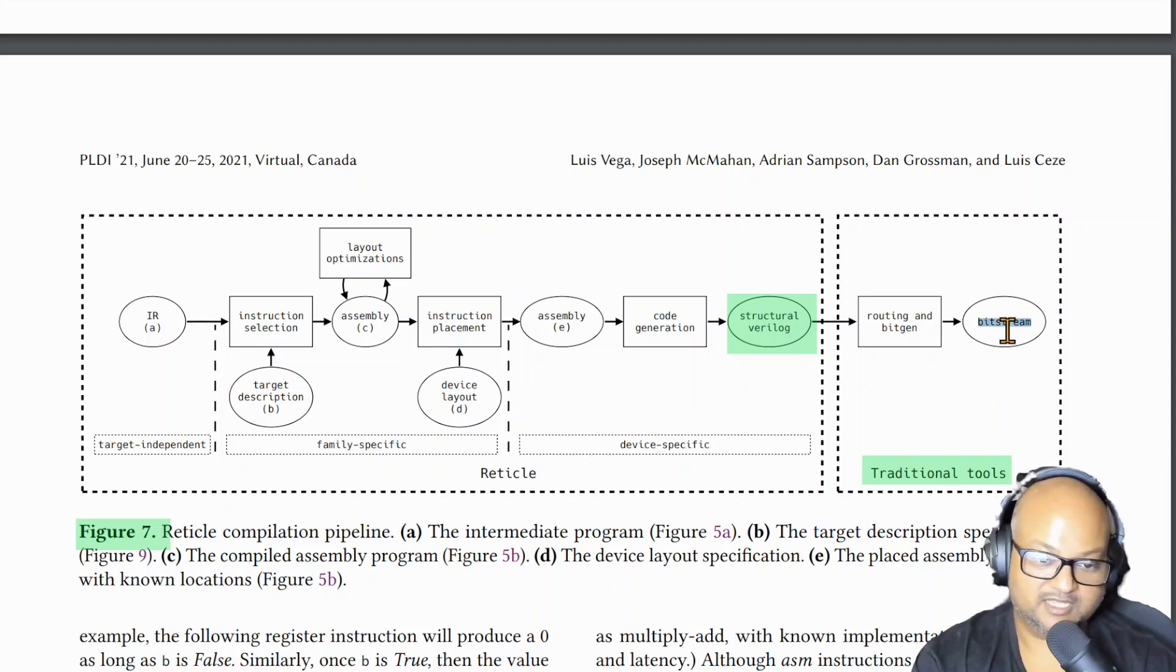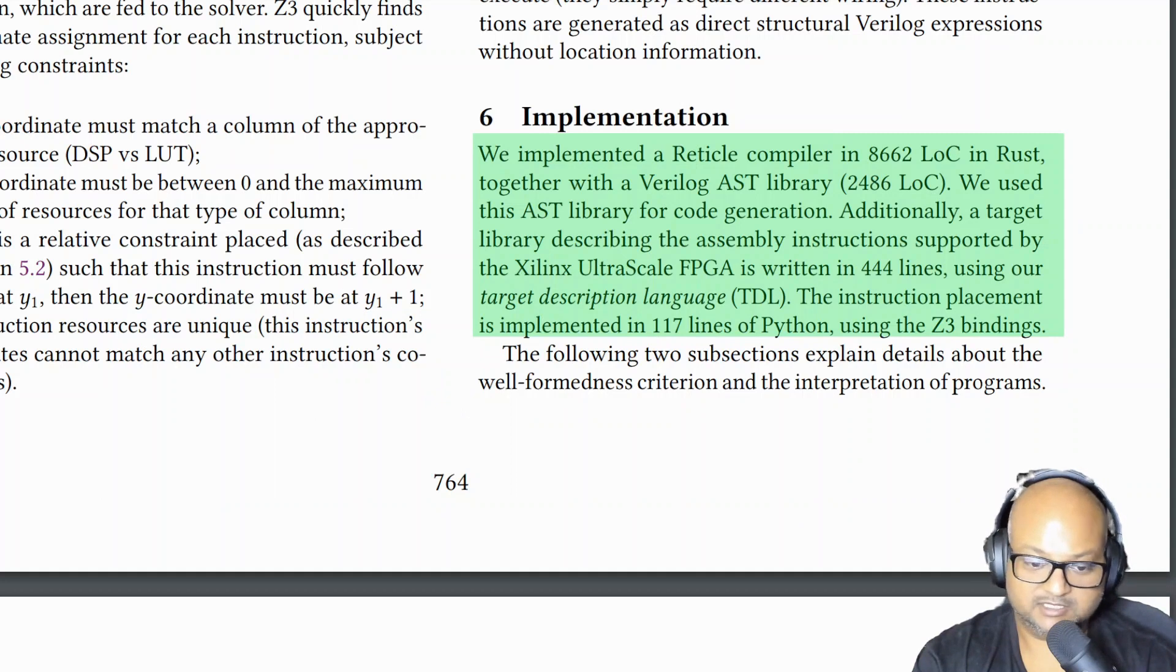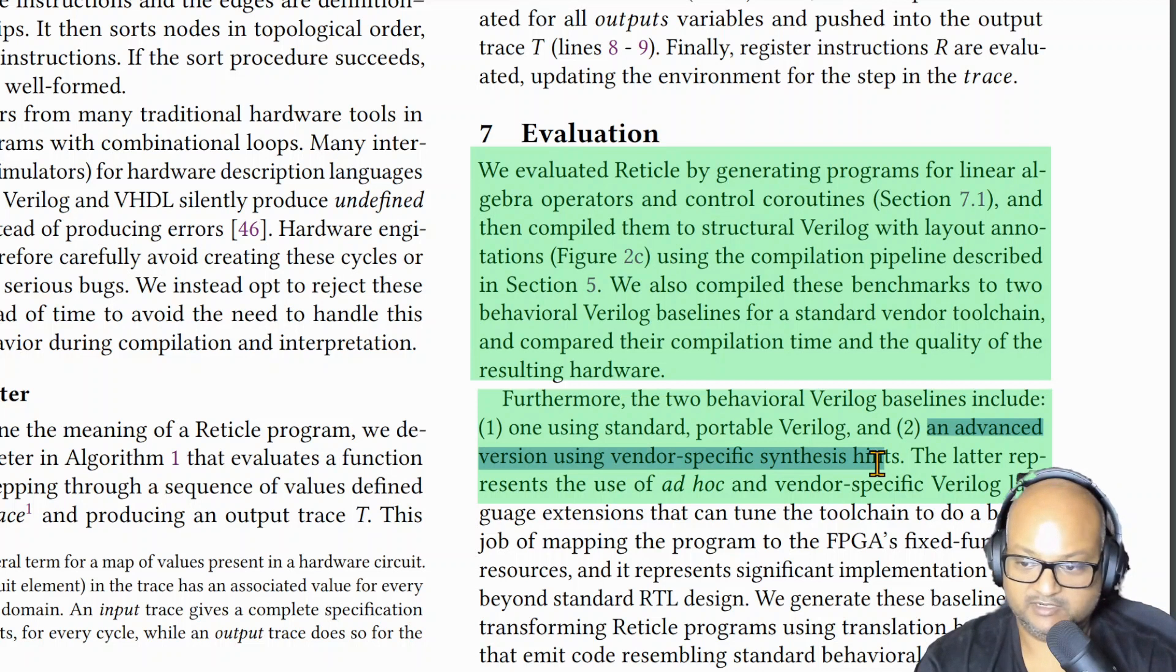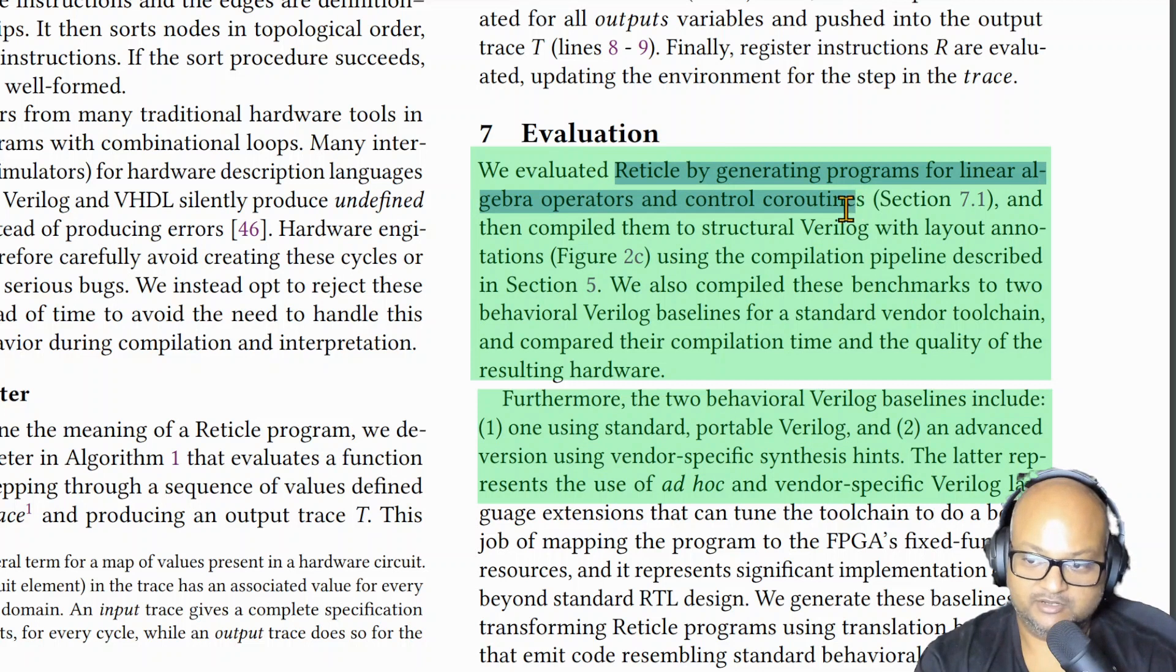Now let's look at some implementation and evaluation and benchmarks. They implemented the Reticle compiler in Rust and it was about eight and a half thousand lines, so pretty manageable, not too big. And then they did some benchmarks with programs for common linear algebra operations and they used as a baseline standard portable Verilog and then also a highly optimized version using a lot of vendor specific hints embedded in the Verilog. And then they compared that to the Reticle version which produced structural Verilog at the end of its tool chain.